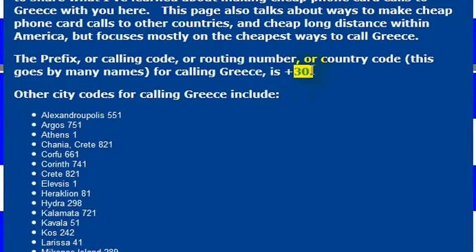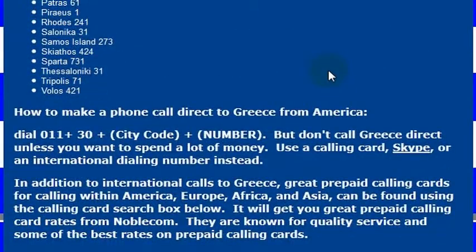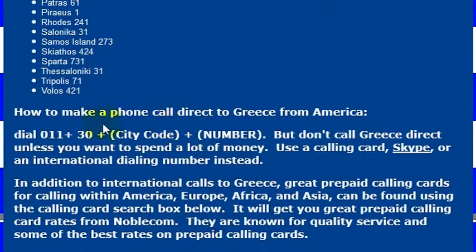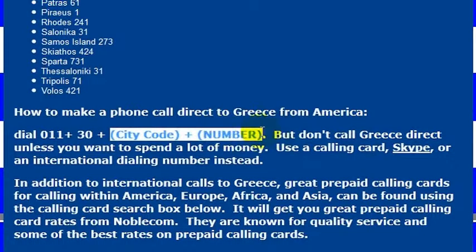So when I go, I may want to know how to call my hotel or to be able to make travel plans. What I need to know in order to do that is the country code for Greece, which is 30. To make a phone call directly to Greece from America, simply dial 011, then 30, which is the country code, and then dial the number.